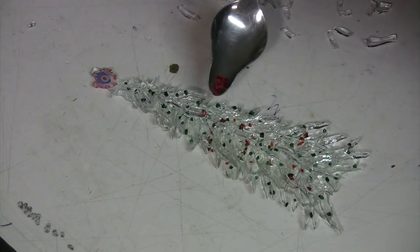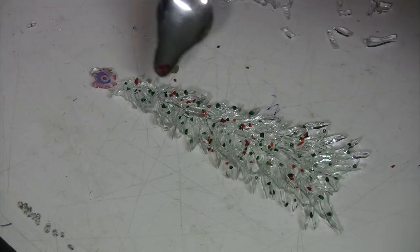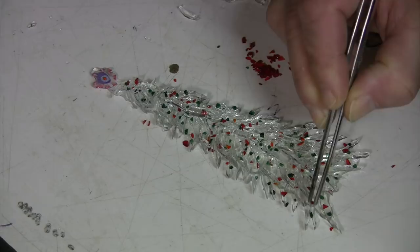And I want to make sure that I get some way out on the tips of my branches. Another squirt. And then some transparent red medium frit, also screened. And I'll call that done.